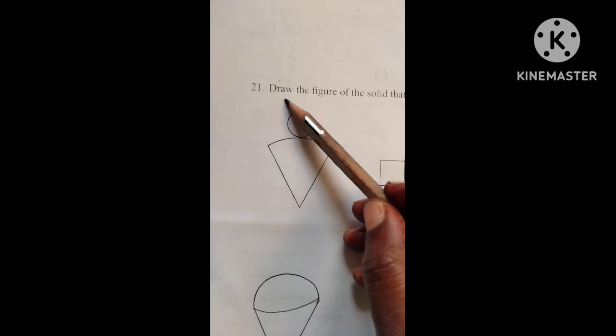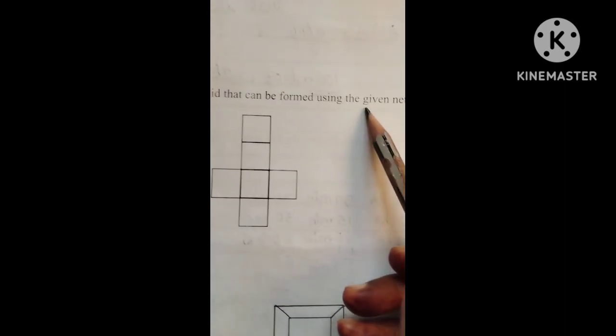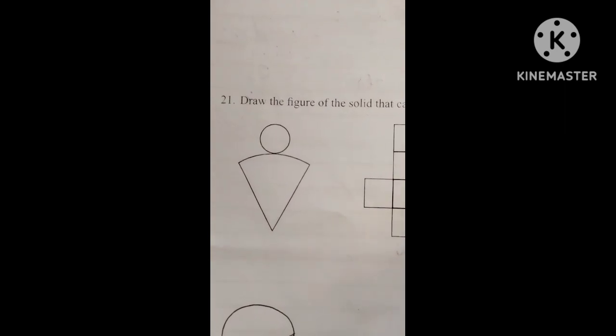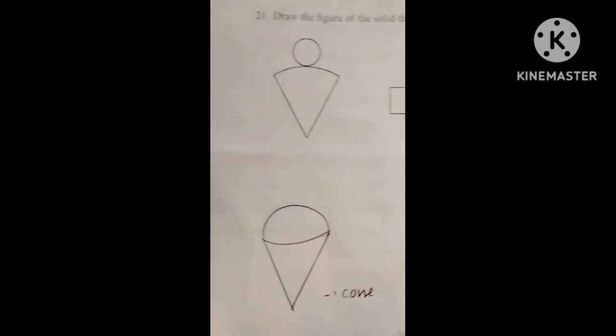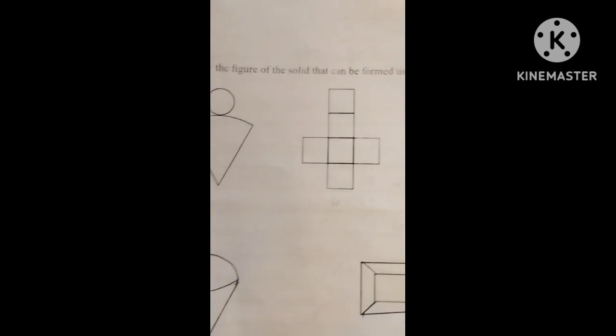21st. Draw the figure of the solid that can be formed using the given network. See, like this networks they are given. You want to write solid shape. See, this is the cone. First question, need to write cone. The next second one is cuboid.